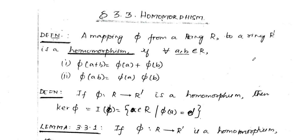In this video, we are going to have the definition of ring homomorphism, kernel, and clear examples. First, we have the definition of homomorphism. A mapping phi from a ring R to a ring R' is a homomorphism if, for every a, b in R, phi of a plus b is phi of a plus phi of b, and phi of ab is phi of a into phi of b. One condition is with regard to addition, the other with respect to multiplication, because these are the two operations in a ring — so two conditions.